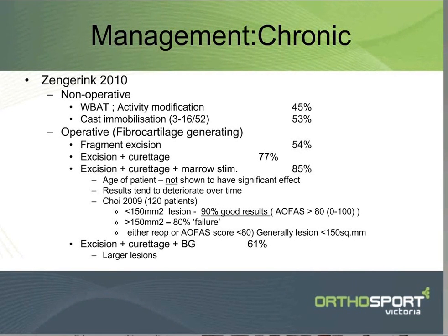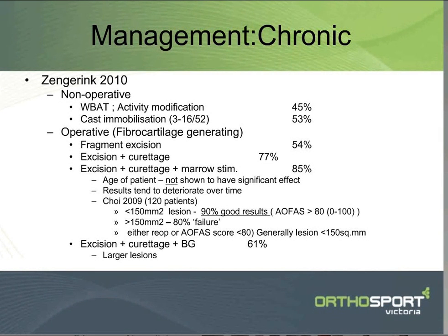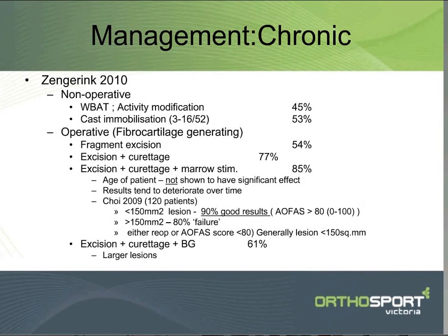In terms of operative treatment, we can split this into those operations that generate fibrocartilage to fill the gap and those that generate hyaline cartilage. In the ones that truly generate fibrocartilage, just taking out the fragment by itself doesn't do a whole lot better than doing nothing. But if we remove the fragment arthroscopically and scrape the base, the results are not bad. And if we scrape the base and drill some holes — marrow stimulation — you get pretty good results, very consistently 80 to 90%.